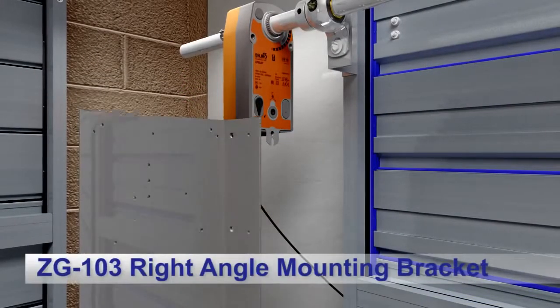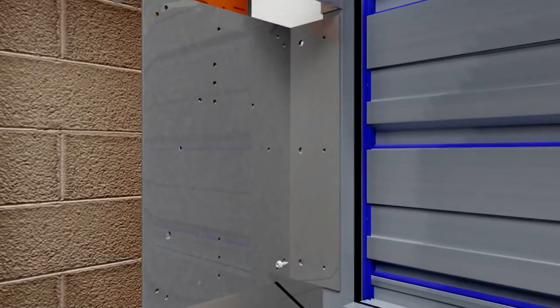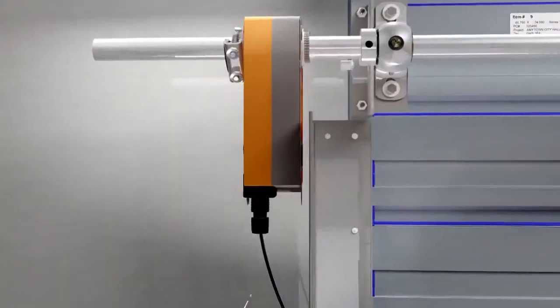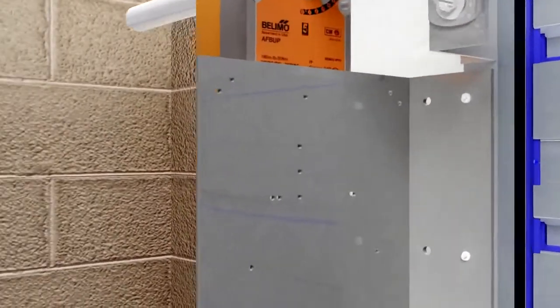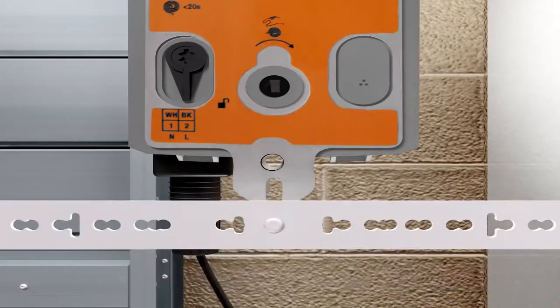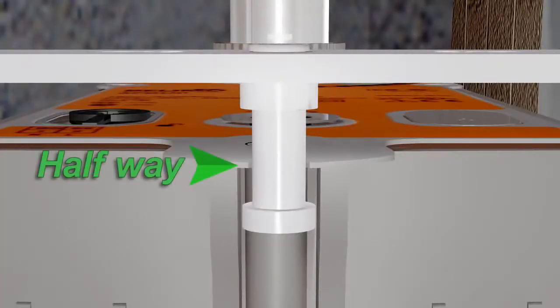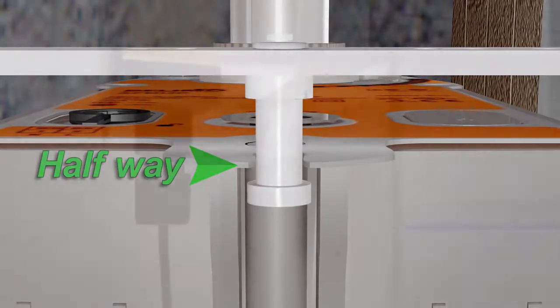Attach a Belimo ZG-103 right-angle mounting bracket to the damper frame with self-tapping screws. The mounting bracket should be set at the proper height so that when the anti-rotation bracket is attached, the U-shaped slot at the base of the actuator plate will fit over the stud of the anti-rotation strap. The stud should be positioned approximately halfway up the U-shaped slot.